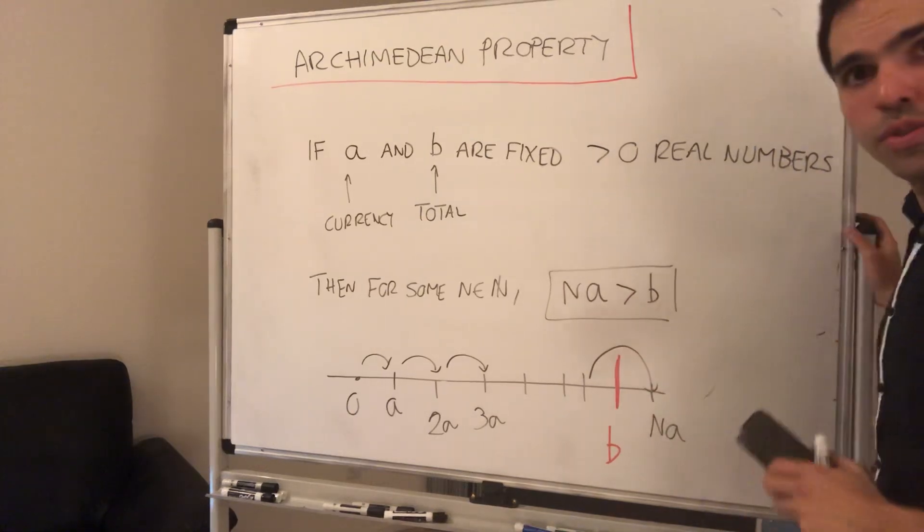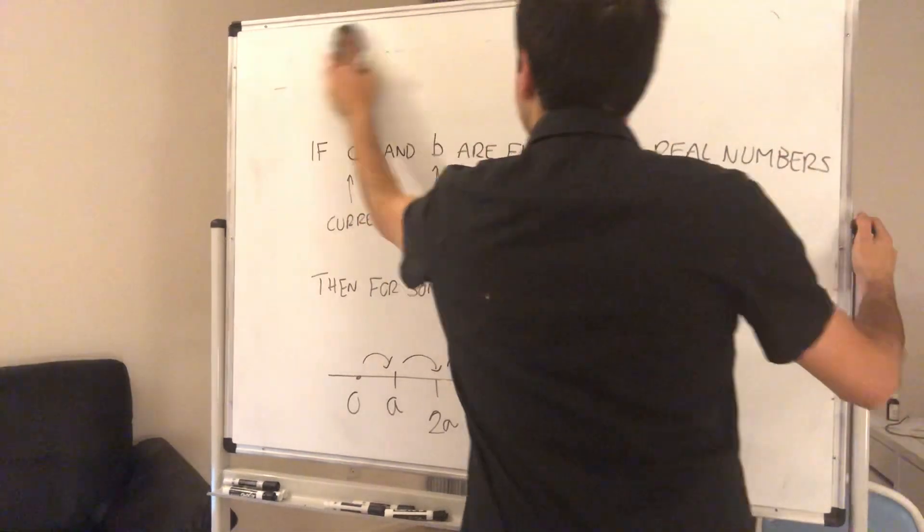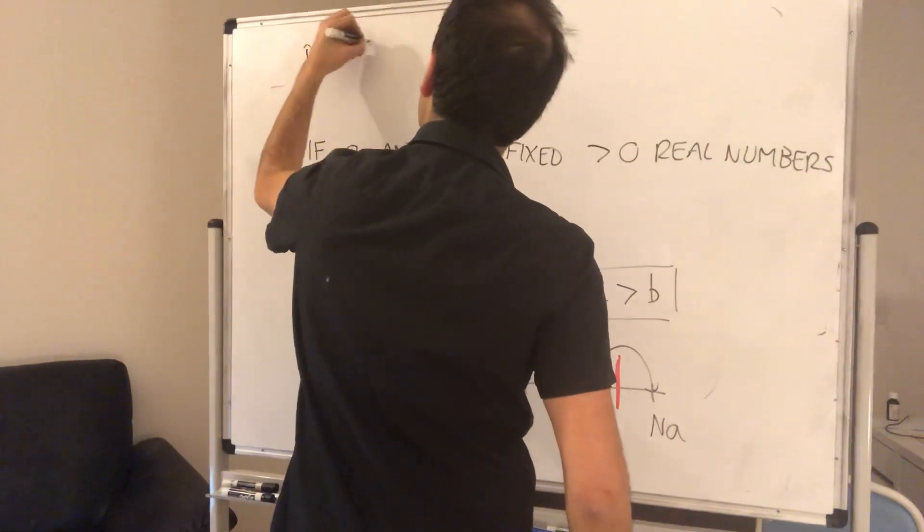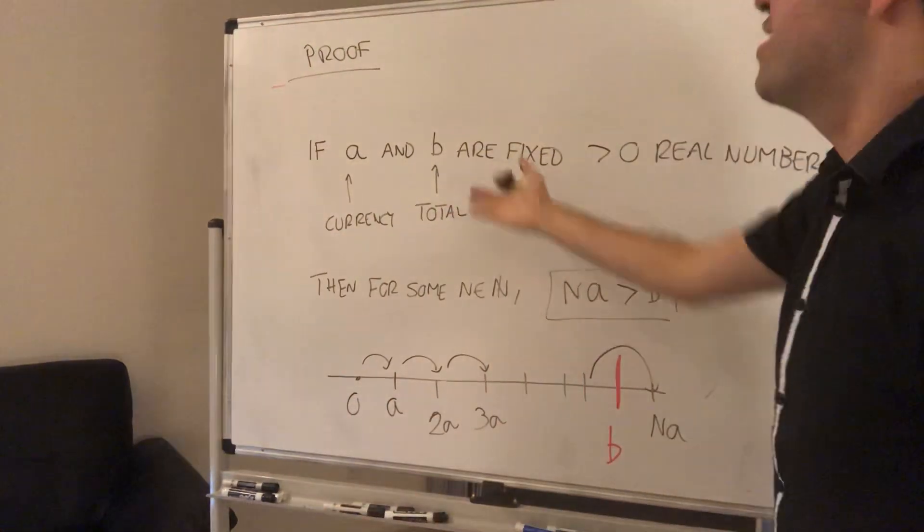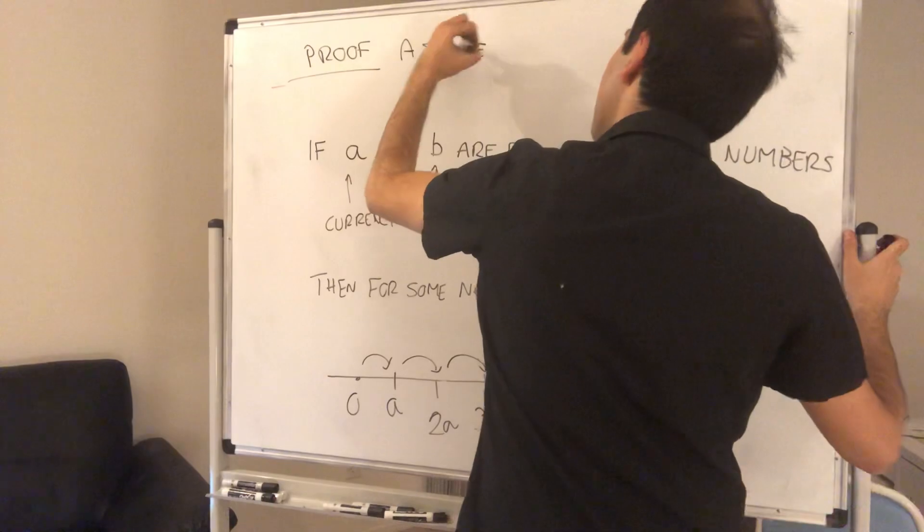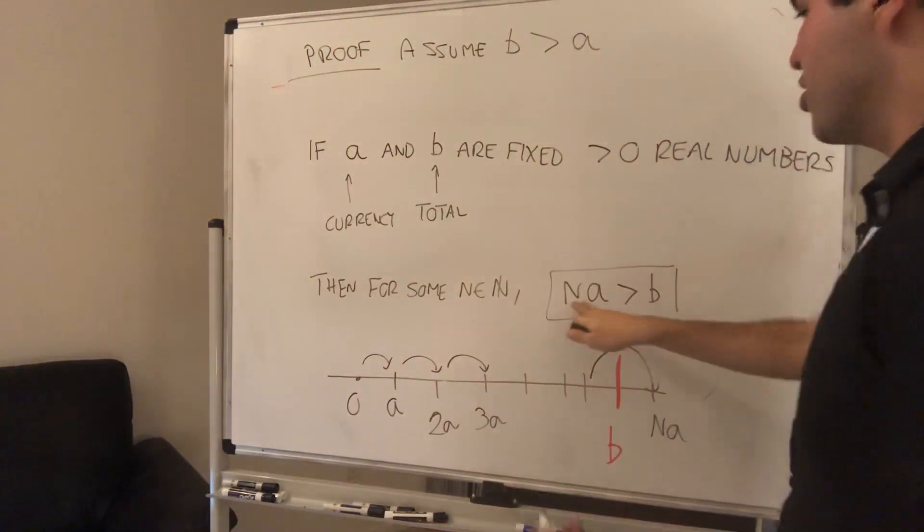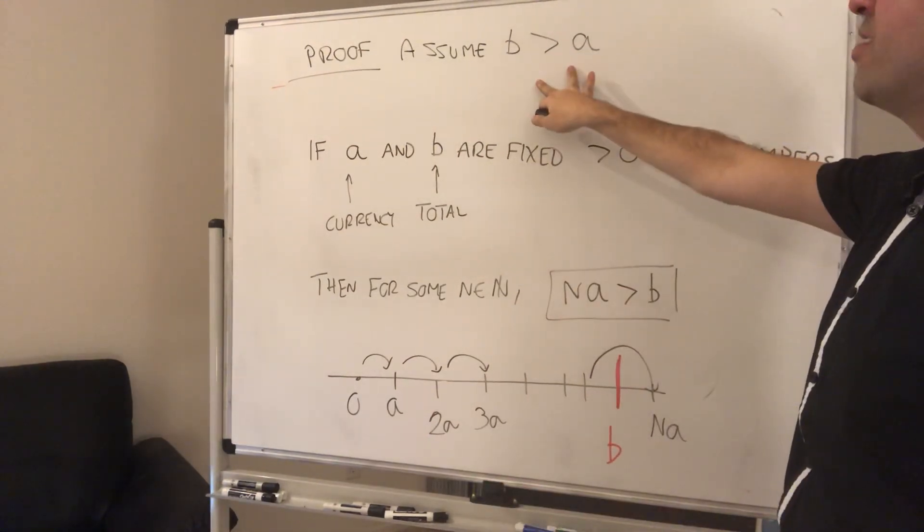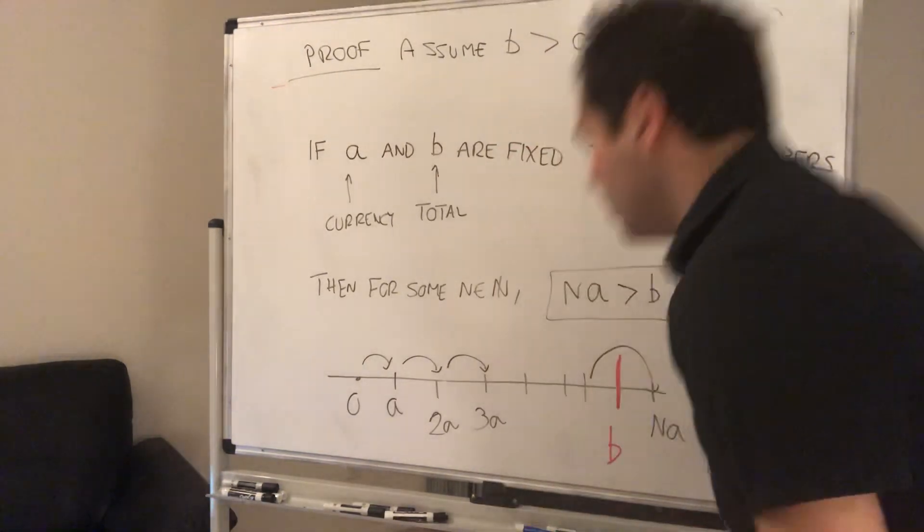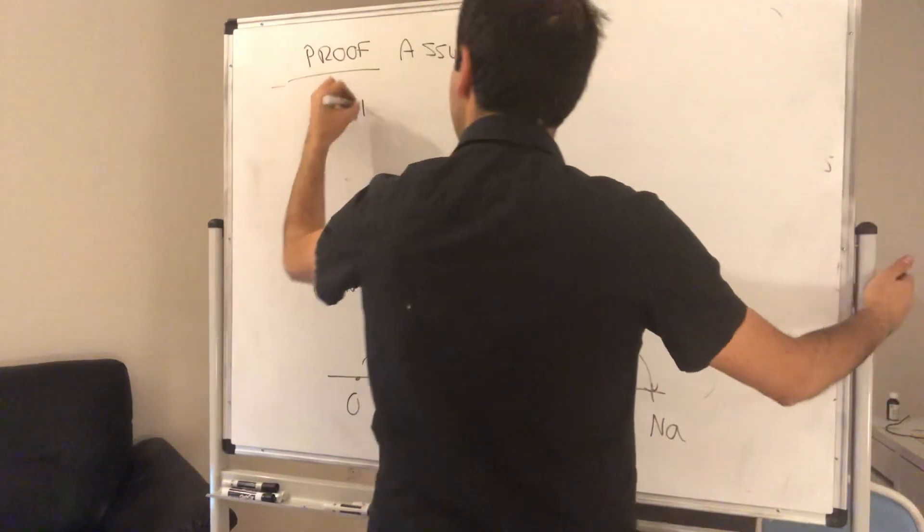But let me show it to you because it's a nice consequence of the least upper bound property. Proof: First of all, assume B is bigger than A because if the total is smaller than your currency, let N be one. And if your total is exactly your currency, let N be two. In particular, suppose this is false. We want to do a contradiction proof.